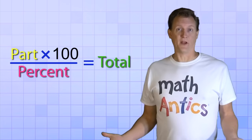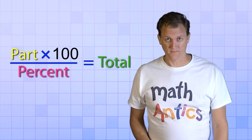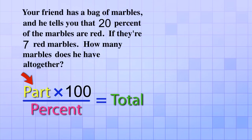That seems simple enough. It's just two steps. Let's try it out on our word problem about the marbles. We know that the part that are red is 7, so step 1 is to just multiply that part by 100. 7 times 100 is 700.